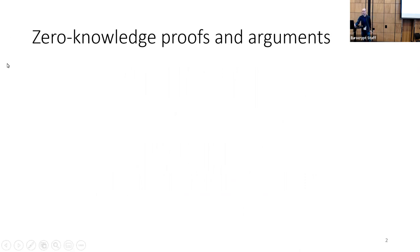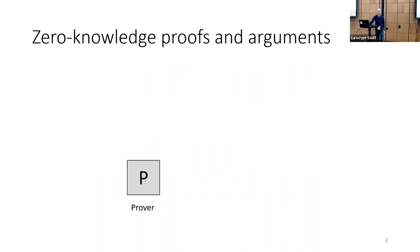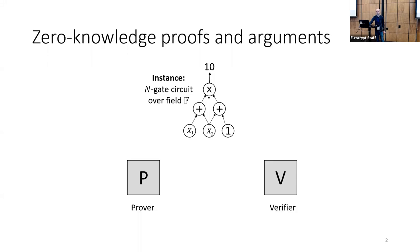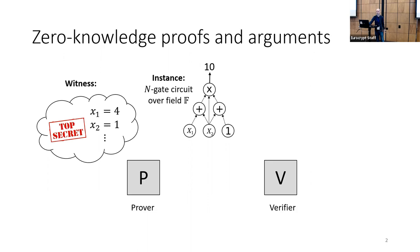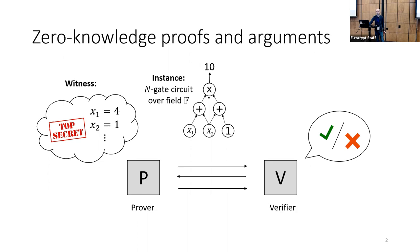This talk is about zero-knowledge proofs and arguments. In the setting of zero-knowledge proofs, we have a prover and a verifier. The prover wants to convince the verifier that a statement is true. We're going to consider NP statements — arithmetic circuits over a finite field F — and the prover wants to convince the verifier that these circuits are satisfiable. The prover knows a secret witness which feeds into this circuit and gives the stated output. The prover and verifier interact, exchange messages in a conversation, and at the end the verifier accepts if convinced that the prover really knows a witness and the circuit is satisfiable.